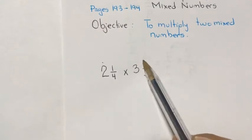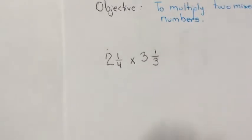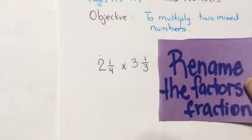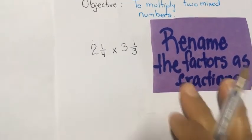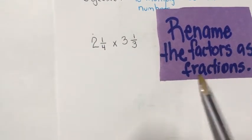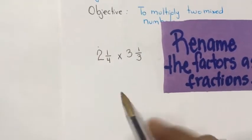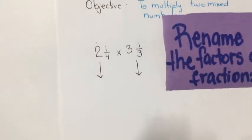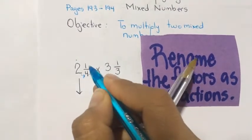Whether you have a whole number, a fraction, or a mixed number, you need to rename the factors as fractions. You can only multiply if all the factors are fractions. This is a mixed number, so we need to rename both. Let's rename each one.